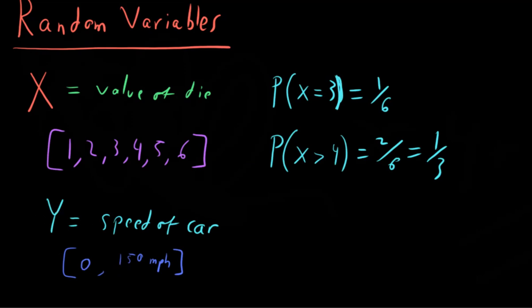And it can go in between at any arbitrary value. And so this would be a continuous random variable. This one is continuous. While this one, the value of the die, is discrete.